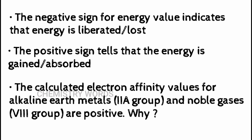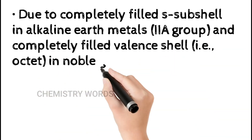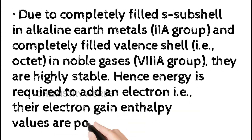The calculated electron affinity values for alkaline earth metals (Group 2) and noble gases (Group 18) are positive. This is because alkaline earth metals have a completely filled s subshell, and noble gases have a completely filled valence shell (ns² np⁶ — the octet). They are highly stable, so energy is required to add an electron, giving positive electron gain enthalpy values.